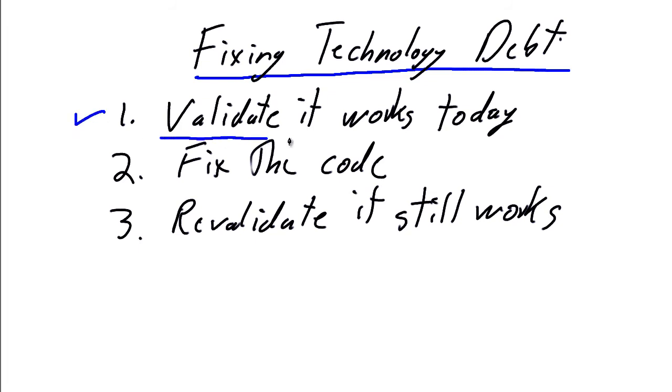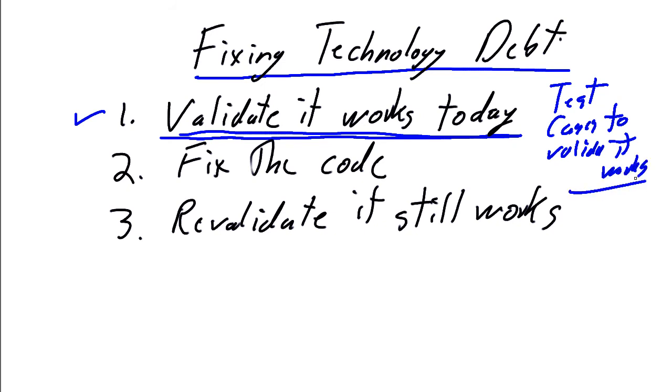The first thing we do is validate it that it works today. Okay, hopefully you have automated testing in place. Hopefully you have an automated build server in place. And therefore, step number one is automatic. The module for the customer maintenance screen is part of our automated build today. The automated build works. It's a green light. So therefore, I have validated that it works today. If you don't have all of these automated processes in place, our first step for fixing technology debt is to develop the test cases to prove, to validate it works. We want to know what the current state is. We want to know what it takes to validate the current state.